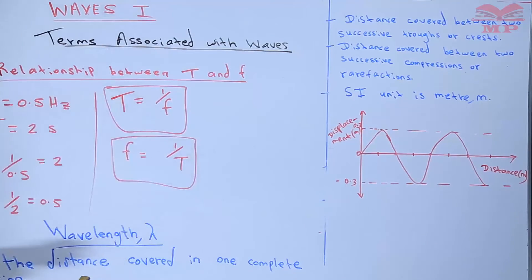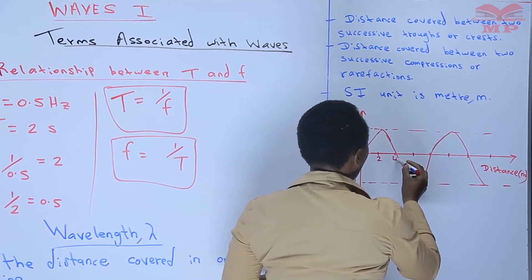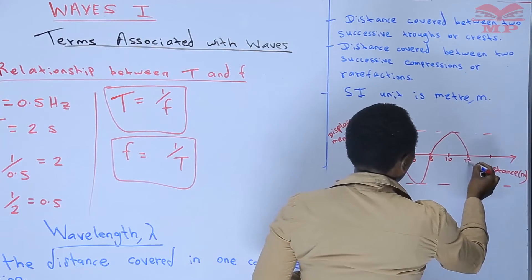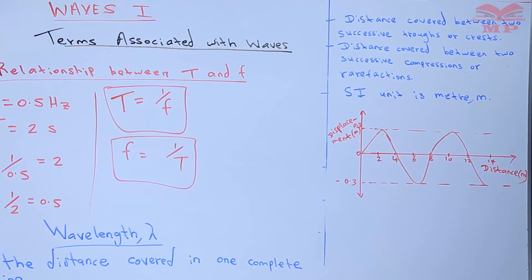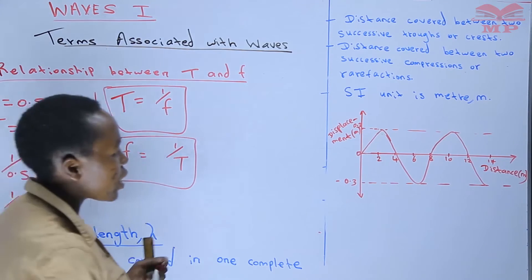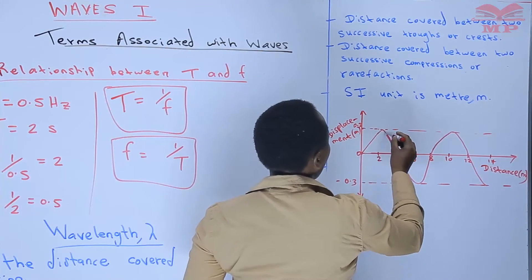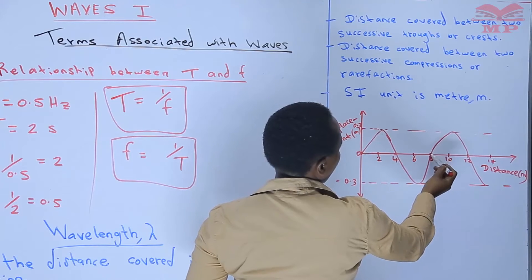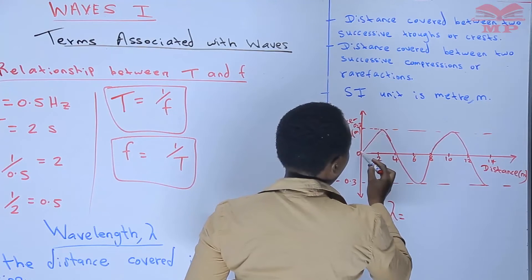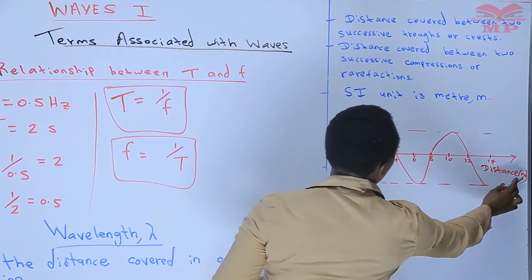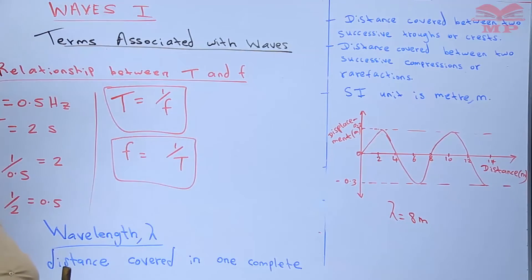So that's our wave. We can start with the first definition. So if we have this as our axis: 0, 2, 4, 6, 8, 10, 12, 14 — we are seeing that wavelength is the distance covered in one complete oscillation. You just come from whichever point where we have a complete oscillation — for example, from here up to here. That's a complete oscillation, and therefore our wavelength is 8 minus 0, which is 8 meters.